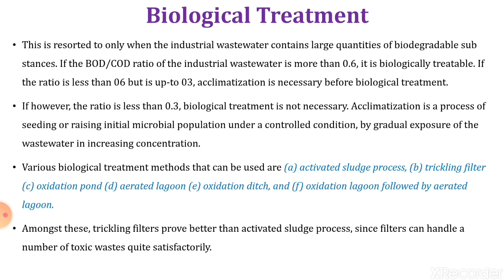Various biological treatment methods that can be used are: activated sludge process, trickling filter, oxidation pond, aerated lagoon, oxidation ditch, and oxidation lagoon followed by aerated lagoon. Amongst these, the trickling filter proves better than the activated sludge process, since the filter can handle a number of toxic wastes quite satisfactorily.